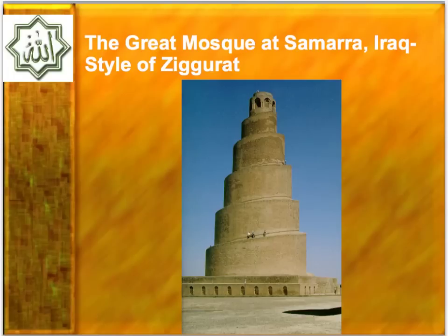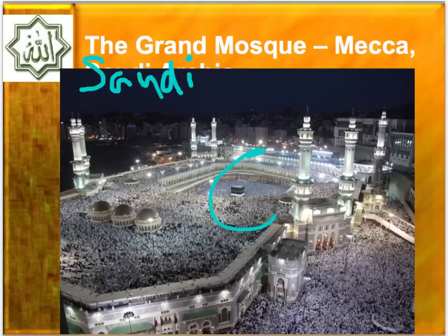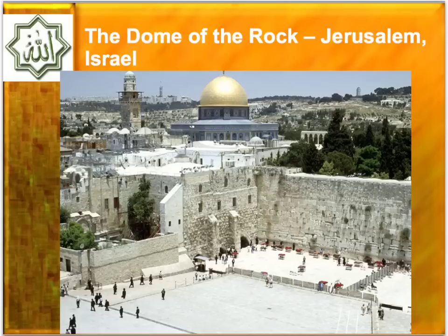This one is awesome — the Great Mosque at Samara, which is built in the style of a ziggurat. Think about that: that's Mesopotamian. And this is Saudi Arabia — the mosque in Mecca with the Kaaba inside. You may have seen it before without knowing exactly what it was. It's in Mecca, Saudi Arabia.